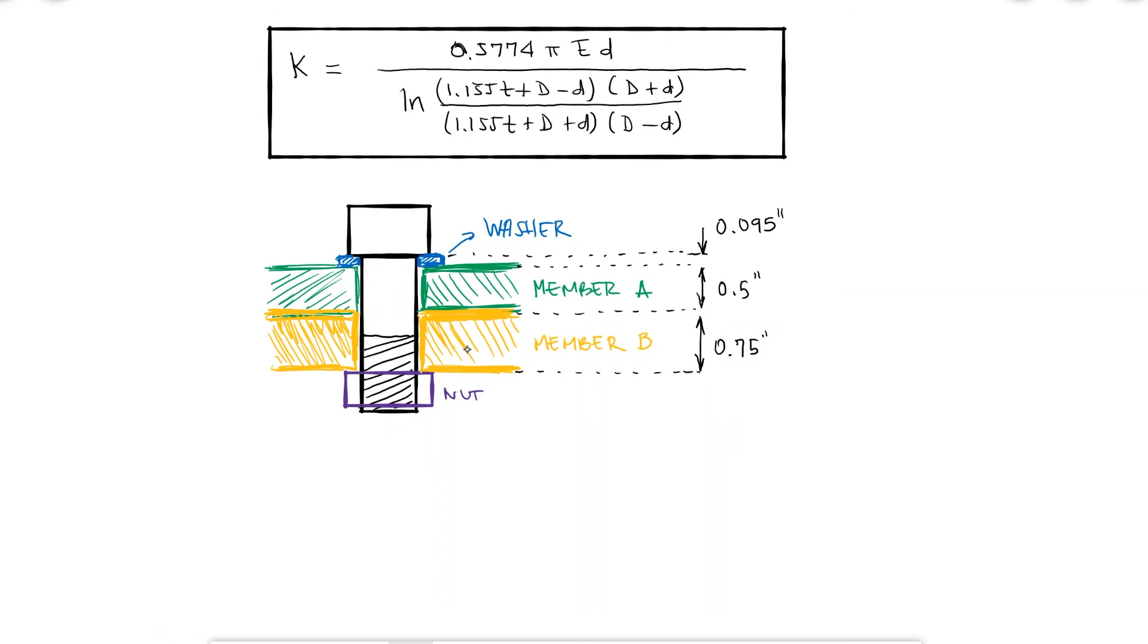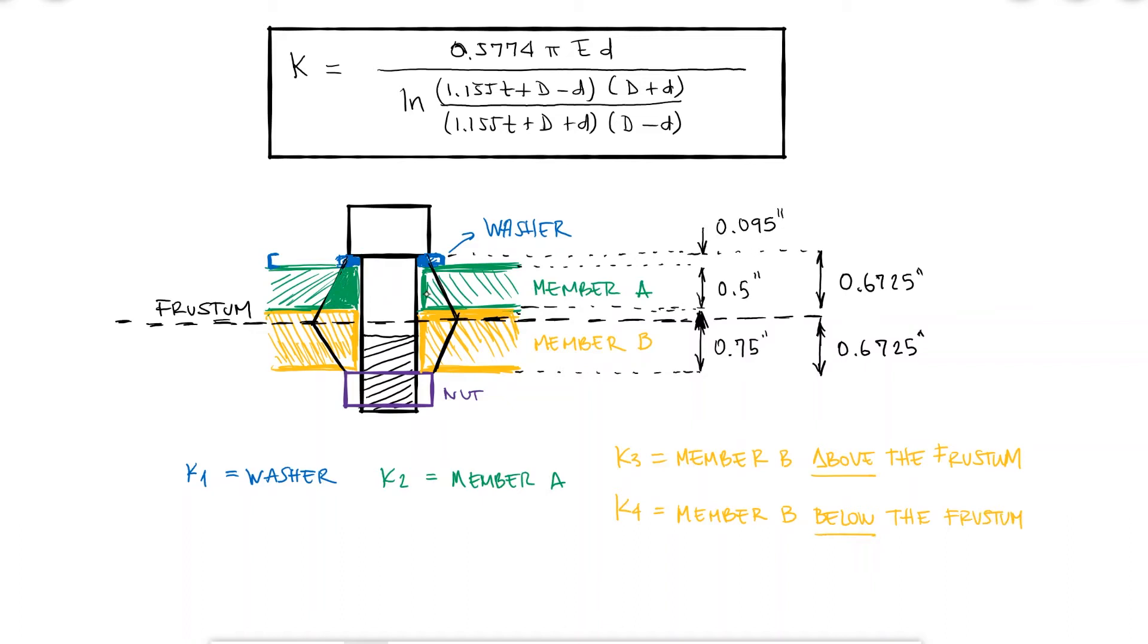The conical profile that we would use to calculate the member's stiffness, km, would have what we call a frustum right in the middle of the grip. Therefore, if we assume three distinct materials for the washer and the two members, we would have four k values in this case, not three, and we would use the member stiffness expression four times.